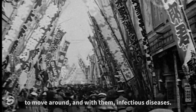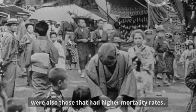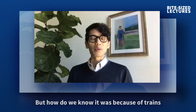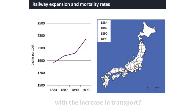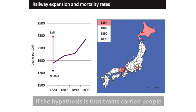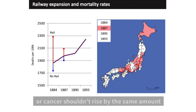As you could guess, areas that had rail access were also those that had higher mortality rates, and this was true until the entire country was connected by trains. But how do we know it was because of trains and not something else, like dangerous work conditions or traffic accidents that went along with the increase in transport? The trick I used was to separate out all the different ways people died and to categorize them by infectiousness. If the hypothesis is that trains carried people and people carried diseases, then deaths from heart failure or cancer shouldn't rise by the same amount as deaths from pneumonia or tuberculosis once an area got trains.